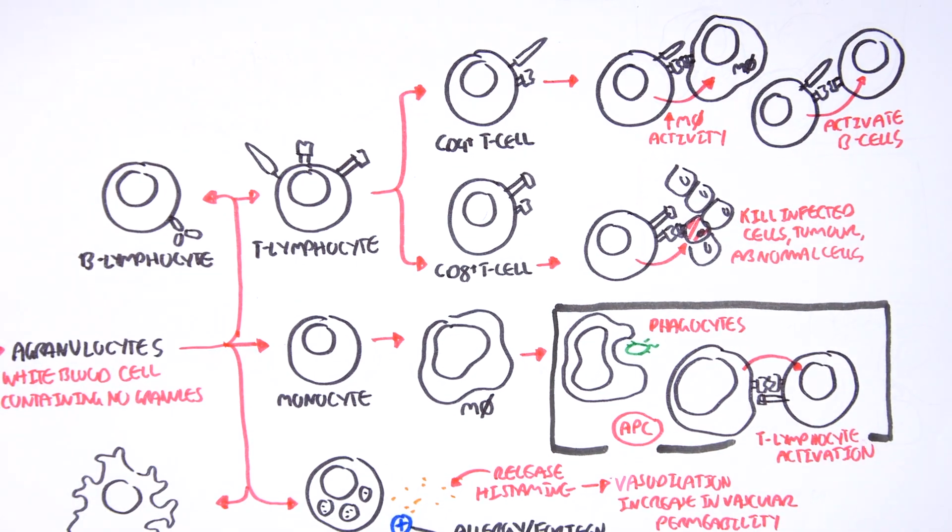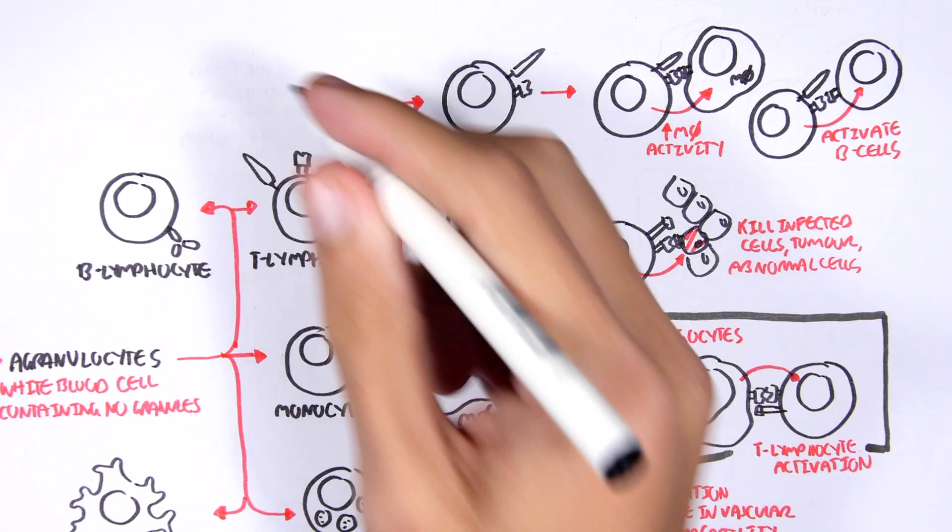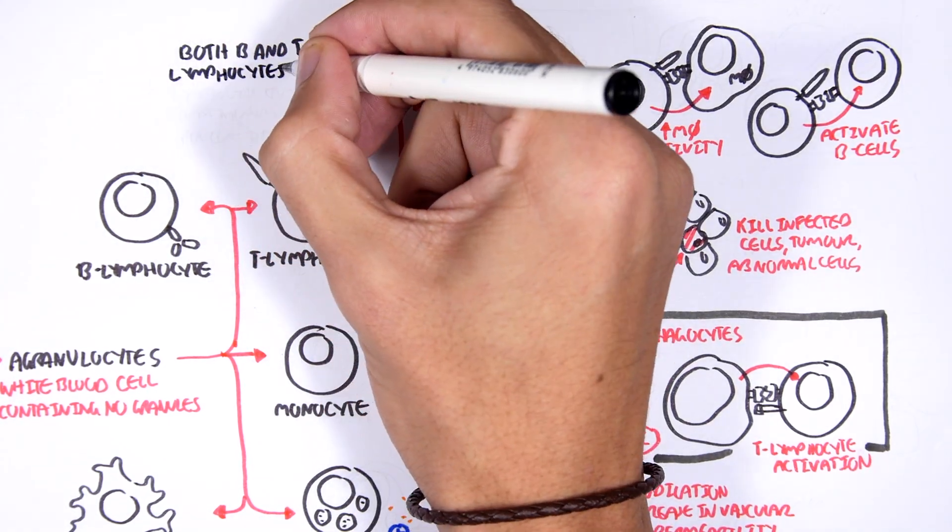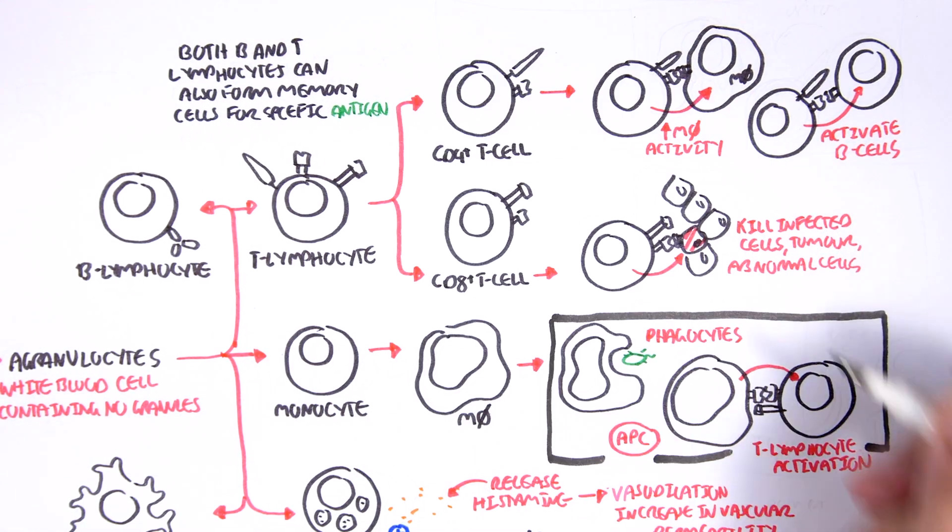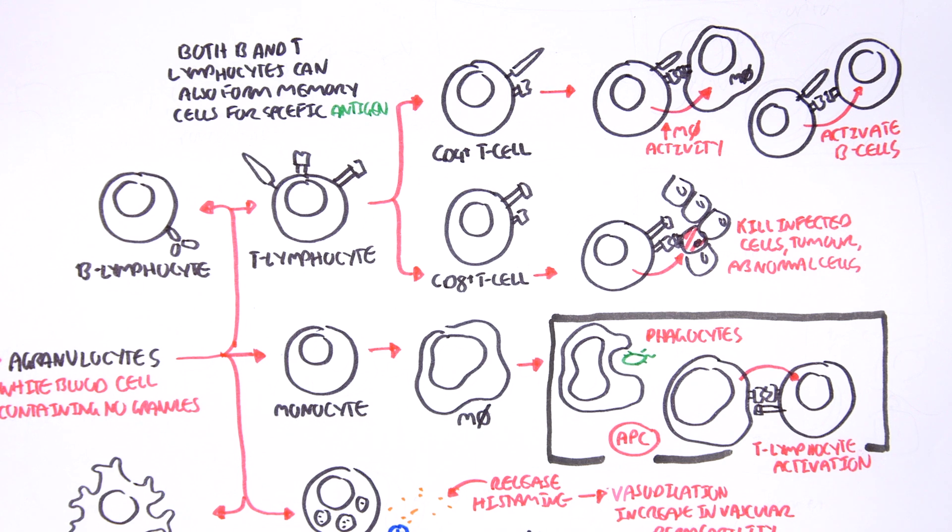Now just to confuse you even further, both B and T lymphocytes can also form memory cells for a specific pathogen or antigen. And so there's actually T memory cells. So you have T helper cells, cytotoxic T cells, and T memory cells.